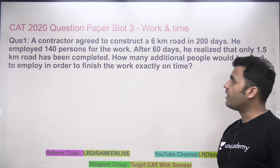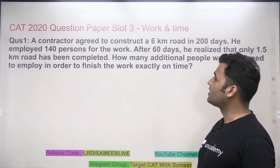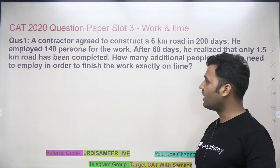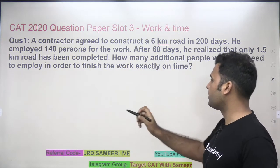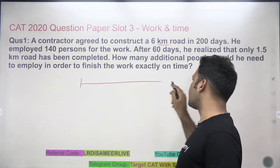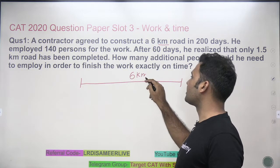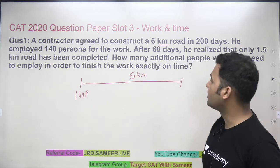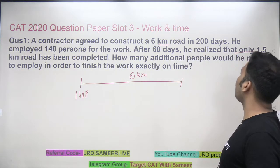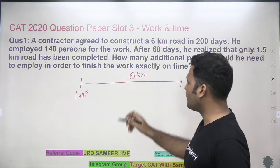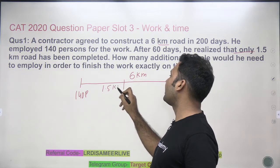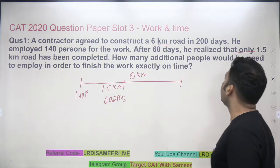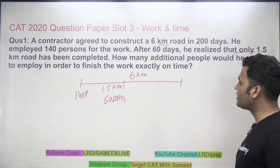Here is question number 1 of CAT 2020 slot 3, time and work. It says a contractor agreed to construct a 6 kilometer road in 200 days and he employed 140 persons for the work. The initial picture is that a 6 kilometer road is supposed to be constructed by 140 persons and they require total 200 days to construct it. Now after 60 days he realized that only 1.5 kilometer road has been completed. So after 1.5 kilometer road has been constructed in 60 days, how many additional people will be needed to employ in order to finish the work exactly on time?